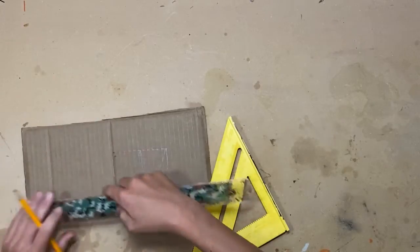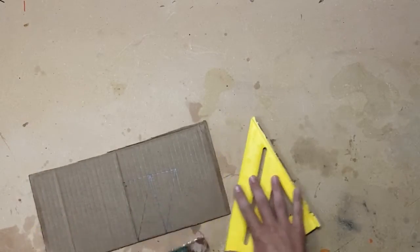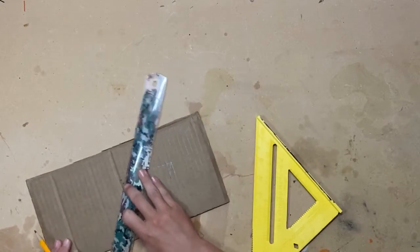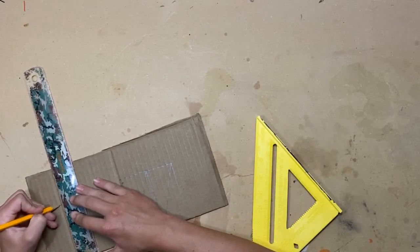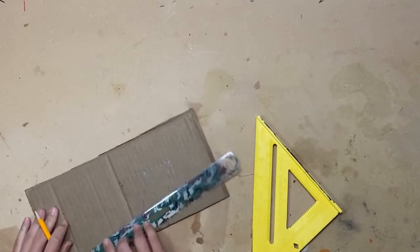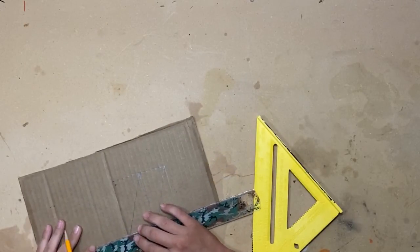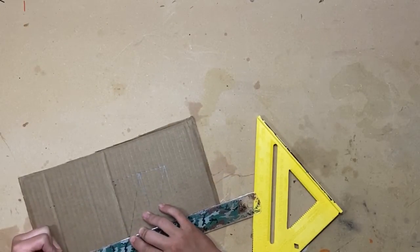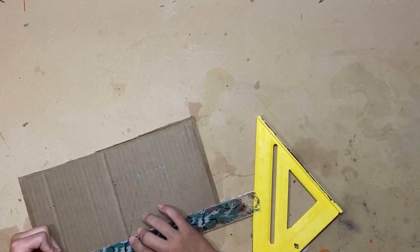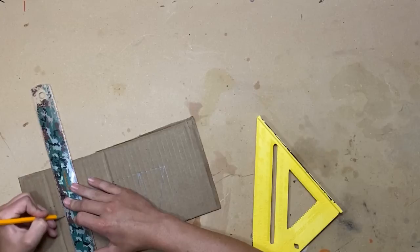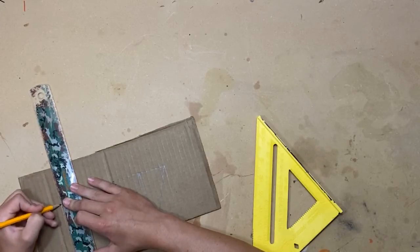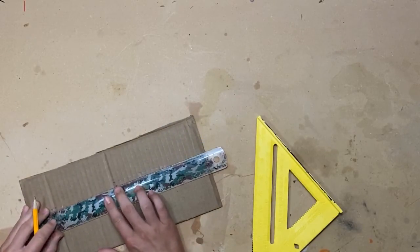You're going to take a ruler and measure 9.5 cm up, just like this. Once you have measured that, you're going to measure 9 cm over, just like this. Now, make a box like this, up on those lines.